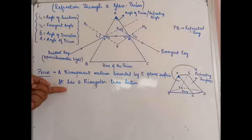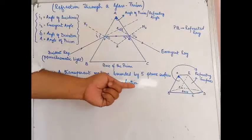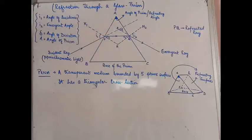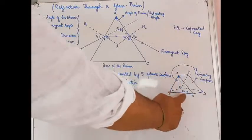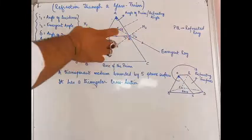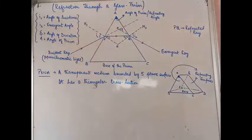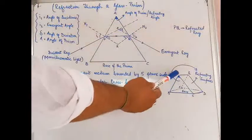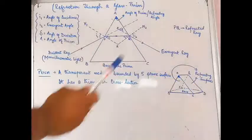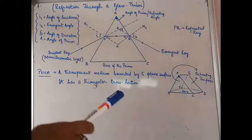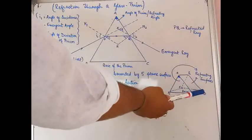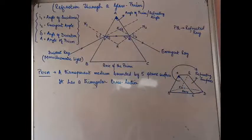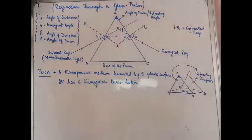That is the first part of the definition. Coming to the second line: the prism has a triangular cross section. This triangular section I have drawn for detailed study is this portion taken out and magnified. So this sloping surface and that sloping surface are nothing but the refracting surfaces as shown in the three-dimensional diagram. You can also have a look at the diagram in the book — one sloping surface and the other sloping surface, both called refracting surfaces.